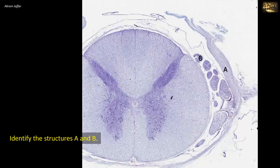Identify structures A and B. This is a section of the spinal cord and the surrounding meninges.